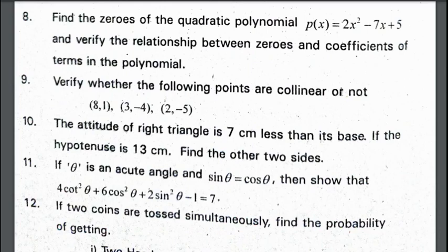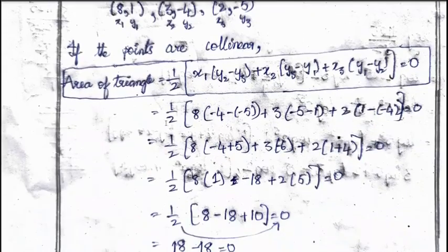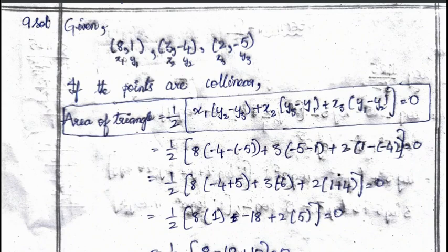Verify whether the following points are collinear or not. To prove these points are collinear, we need to prove area of triangle is equal to 0. If we prove this area of triangle equals 0, then these points are collinear. We will take the three points as x₁, y₁, x₂, y₂, x₃, y₃ and replace in the area of triangle formula which is ½[x₁(y₂ - y₃) + x₂(y₃ - y₁) + x₃(y₁ - y₂)]. As area of triangle equals 0, then these points are collinear.